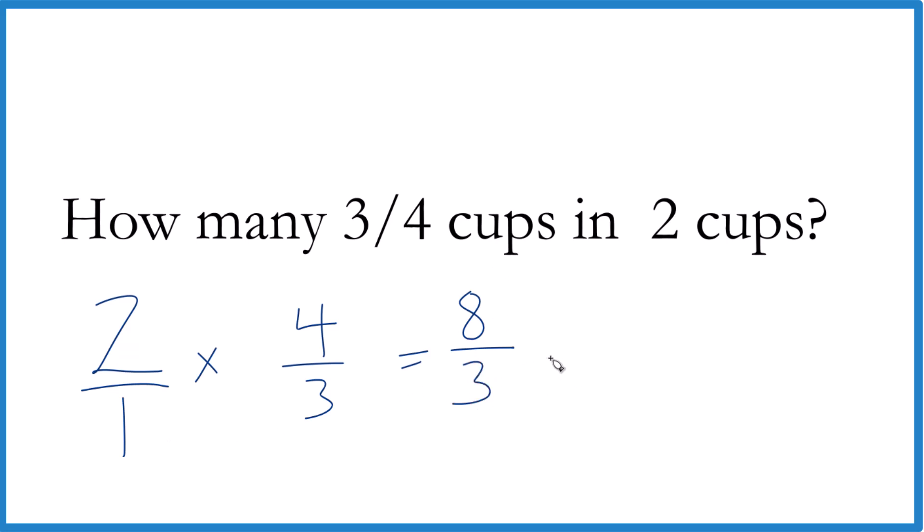This is an improper fraction. Let's change it to a mixed number. Three goes into eight, two times three would be six, with two left over, then bring the three across.